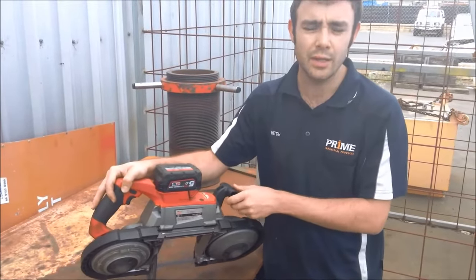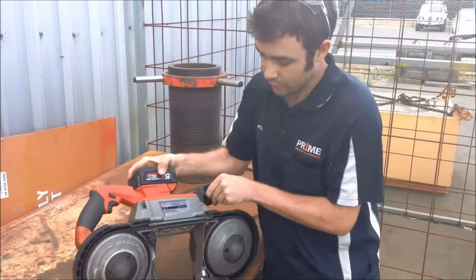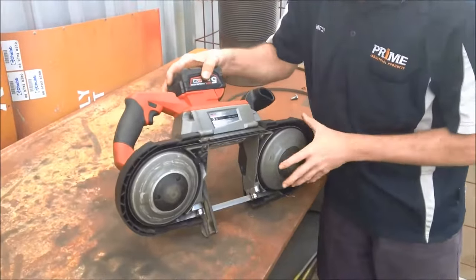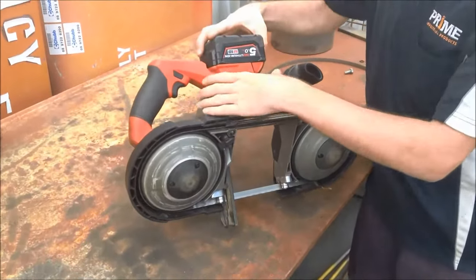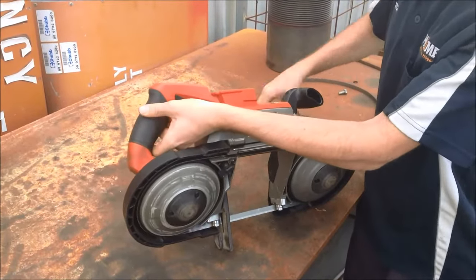Today we're going to show you how to change the blade on the M18 Milwaukee Fuel bandsaw. The first step is to make sure you have the tool isolated. Lock off the switch and remove the battery. Put them aside.